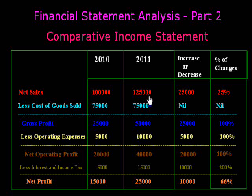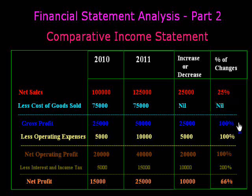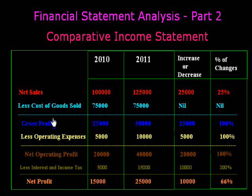If we deduct the cost of goods sold from net sales, we get gross profit: one lakh minus seventy-five thousand equals twenty-five thousand. In 2011, the gross profit is fifty thousand, an excess of twenty-five thousand. Due to controlling our cost of goods sold, our gross profit increased by one hundred percent. We will still look at the percentage changes in operating and non-operating expenses.